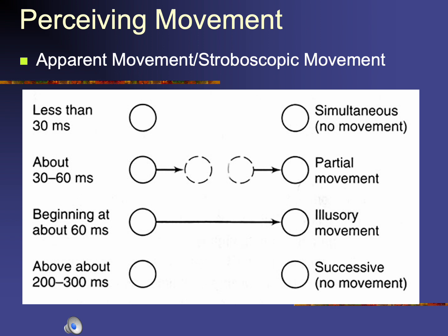At about 30 to 60 milliseconds, you begin to see partial movements, as if one light source is moving from left to right. So if the left one comes on first and then the right one with a 30-to-60-millisecond difference, you will begin to perceive those two light sources as if one on the left is moving toward the right. At about 60 milliseconds — which is six-tenths of a second — you will see illusory movement: if one appears on the left and then 60 milliseconds later the other appears, you put them together as the left one moving to the right. Above 200 to 300 milliseconds, you see them as two independent light sources appearing sequentially, not as one moving.